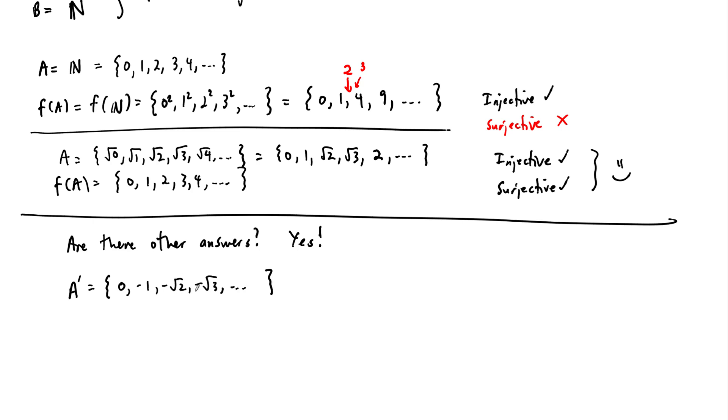But there's also no reason that we can't mix up pluses and minuses. So we could do like an A double prime. We could do {0, 1, -√2, √3, -2, √5, ...}. We could have the plus and minus signs alternate back and forth as you go through this progression. And actually, you can just have any random assignment of a plus or a minus as you go through, and it would still work. That will still be injective and surjective.